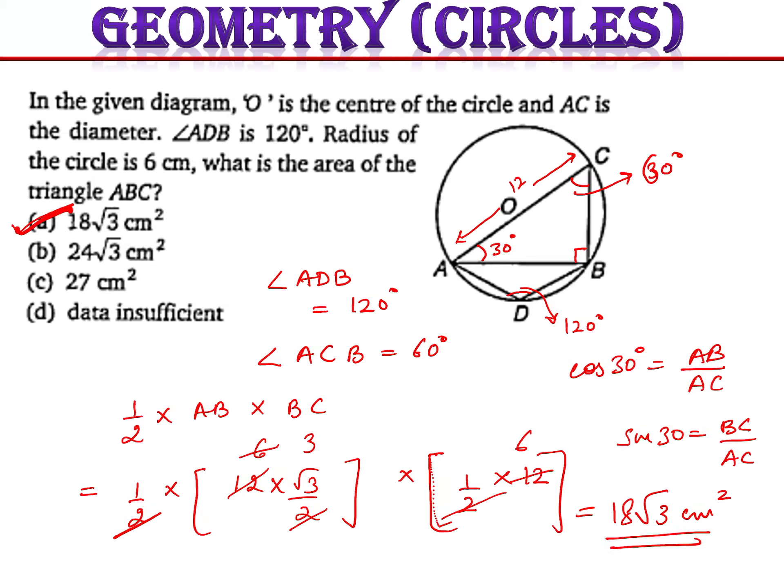The main properties used are the cyclic quadrilateral property and the angle in a semicircle being a right angle, followed by trigonometric ratios to find sides AB and BC. We now move to the next question.